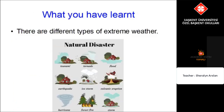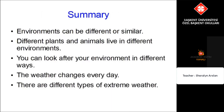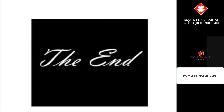What you have learnt: there are different types of extreme weather including tornadoes, floods, earthquakes, forest fires, storms, tsunamis and hurricanes. Our summary: environments can be different or similar; different plants and animals live in different environments; you can look after your environment in different ways; the weather changes every day; and there are different types of extreme weather. Thank you for listening.